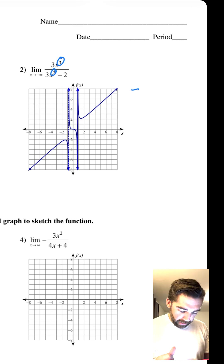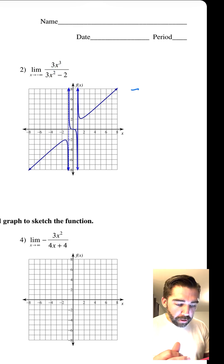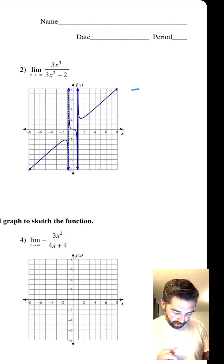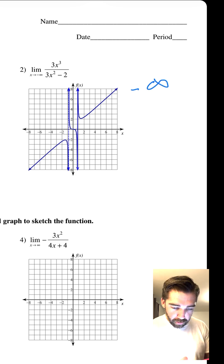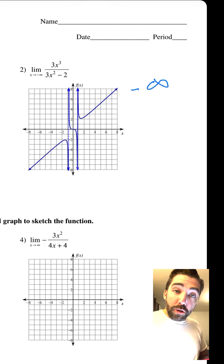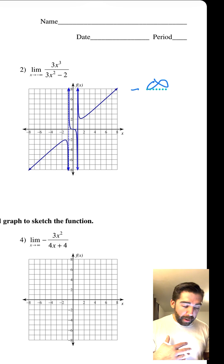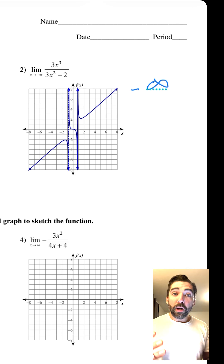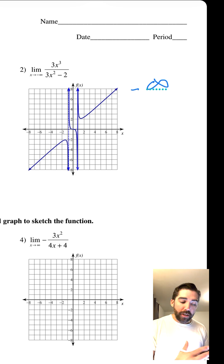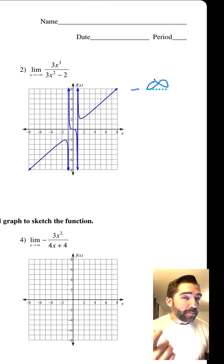If our exponent in our numerator is bigger than our exponent in our denominator, then we're going to be approaching either negative infinity or positive infinity. It just depends on the graph.